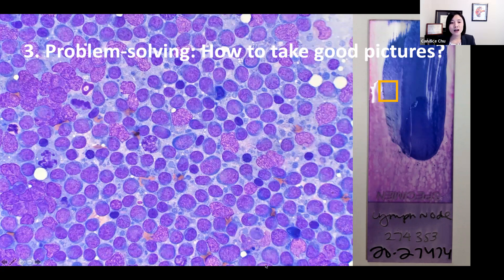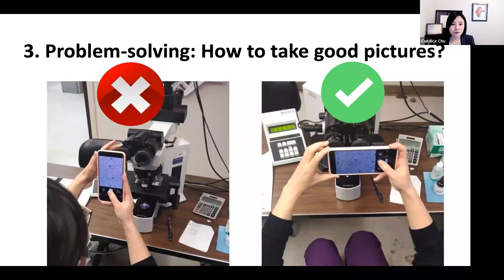So once they learn where to look at the cytology smear, then I teach them how to take good pictures. I teach them it is very important to do it horizontally. Don't do it vertically because that's usually more difficult.